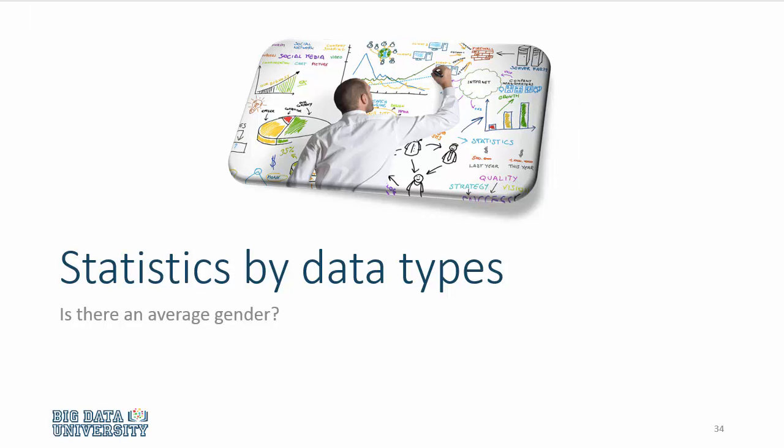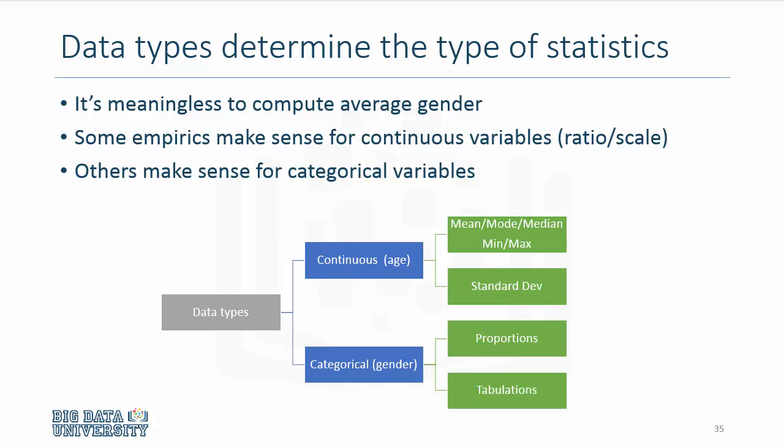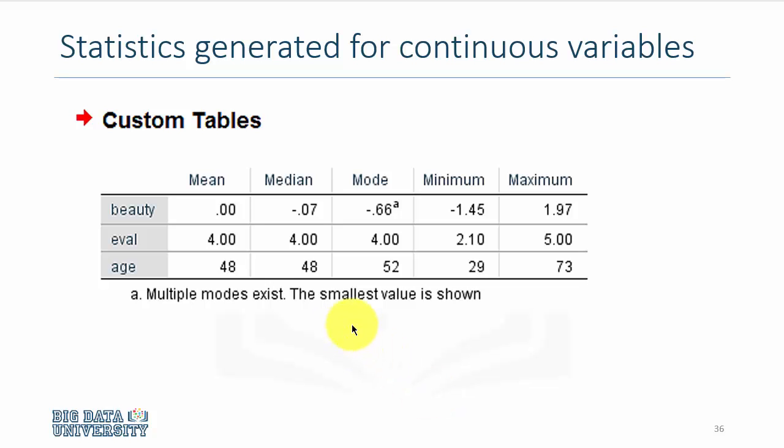The type of statistics we compute depends upon the type of data and, more importantly, the type of variable. Essentially, if you have continuous variables, such as age, you can compute measures of central tendency or variance. But if you have categorical data, such as gender, you can compute proportions or other tabulations. So you have already seen the type of statistics we compute for continuous variables.